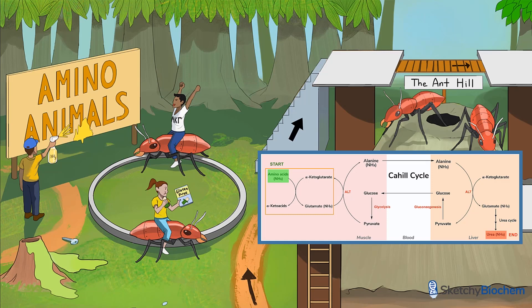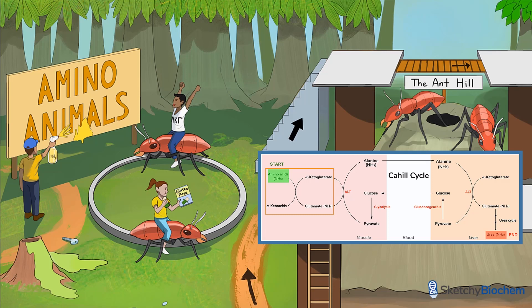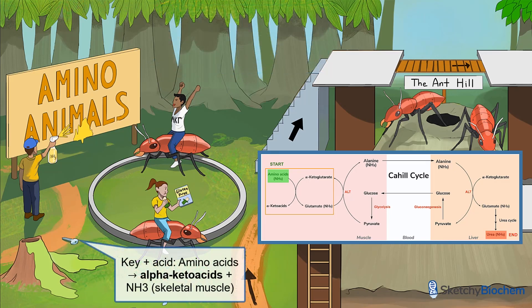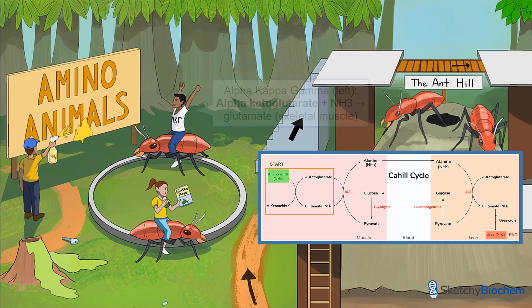Inside skeletal muscle, amino acids are deaminated to form their respective alpha-keto acids and NH3. That groundskeeper cleaning the amino animal sign with an NH3 cleaner will help you remember that amino acids are broken down to ammonia. As for the alpha-keto acids, there's a key and some acid — put them together, boom, keto acids. Alpha-ketoglutarate, an intermediate of the TCA cycle, accepts NH3 to make glutamate.